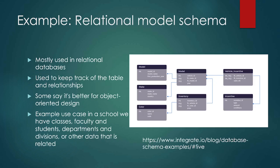A relational model schema is mostly used for relational databases and is really helpful for keeping track of tables and relationships. For some people this is better for object-oriented design, but one of the things that's nice is it allows us to actually see how the tables relate to each other in a more visual way. We could have a school with tables for classes, faculty, students, departments, and divisions. We could then say faculty belong to this department in this division, faculty teach these classes, these classes belong in this department and this division, and we can see how all of those different relationships work.